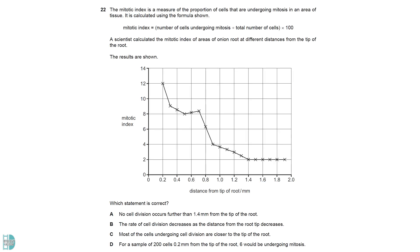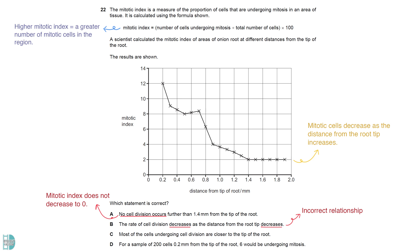According to the formula, a high mitotic index indicates a greater number of mitotic cells in the region. The graph shows us that there are fewer mitotic cells as the distance from the root tip increases. A is wrong because it should be zero if there is no dividing cell at all. B is incorrect as the rate decreases when the distance increases. C is the right answer. D is wrong because at 0.2 mm, the mitotic index was 12. If the total number of cells is 200, there should be 24 mitotic cells.